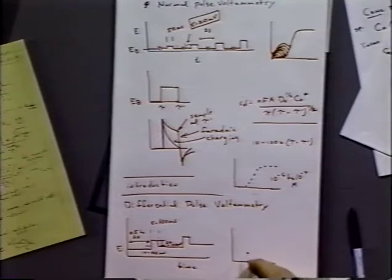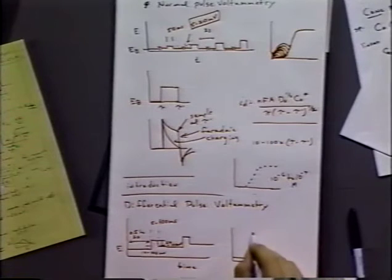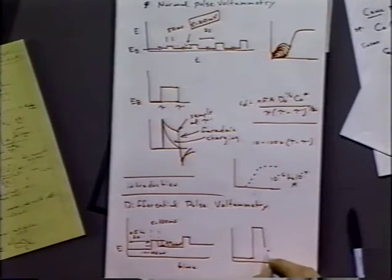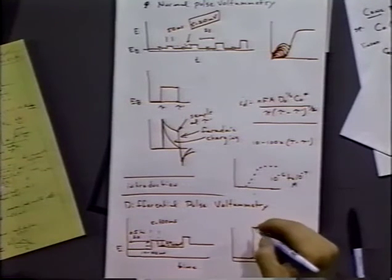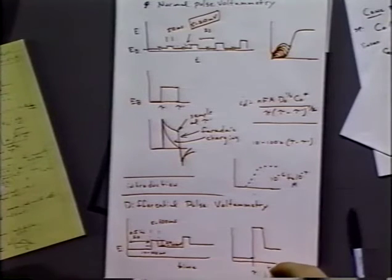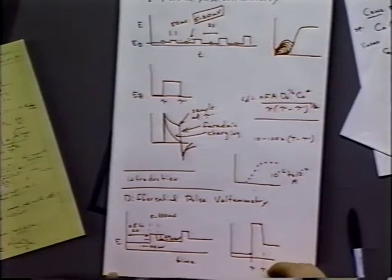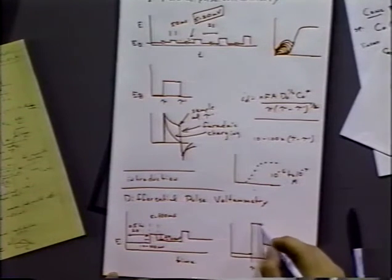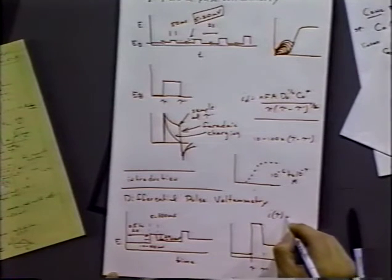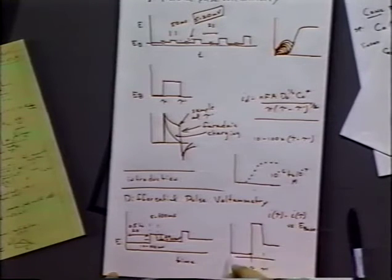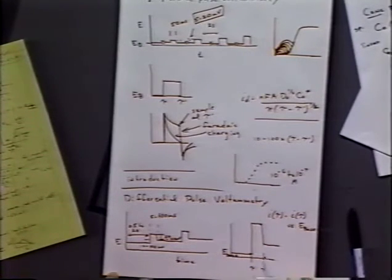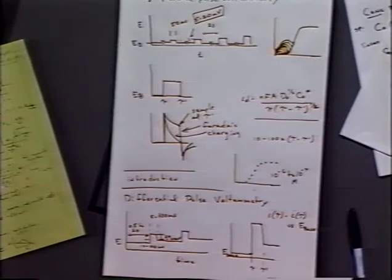The idea is that we can step from the base to the step potential and then back and then measure the difference in current between those two points, between the time tau and tau prime. And our current would be measured at that same point. This would be E base down here. So every time we do a step out and back, we measure the current as a function of tau or tau prime. We plot that versus the base potential.